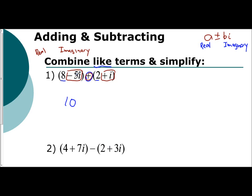My imaginary numbers are negative 5i and positive 1i. And so I'm adding those. So negative 5 plus 1 is negative 4. So 10 minus 4i is my answer.